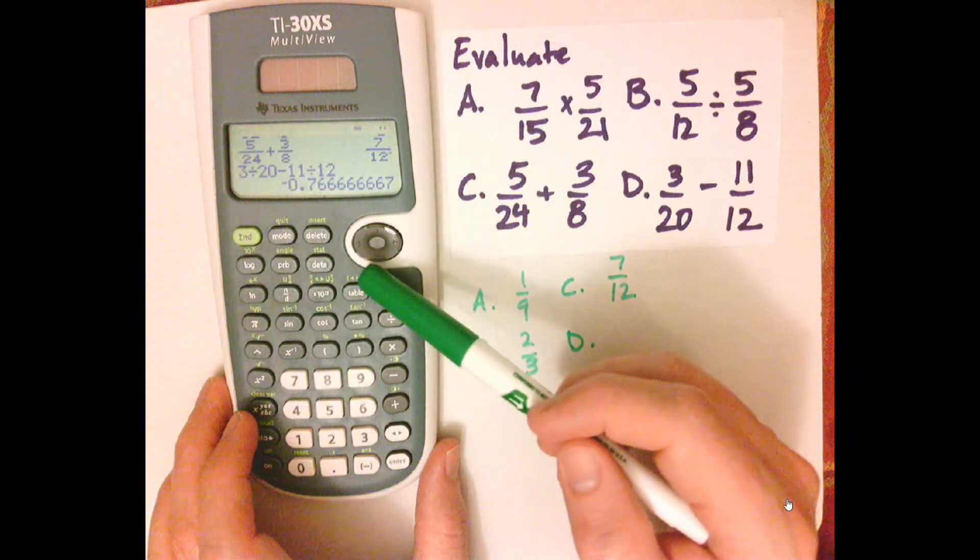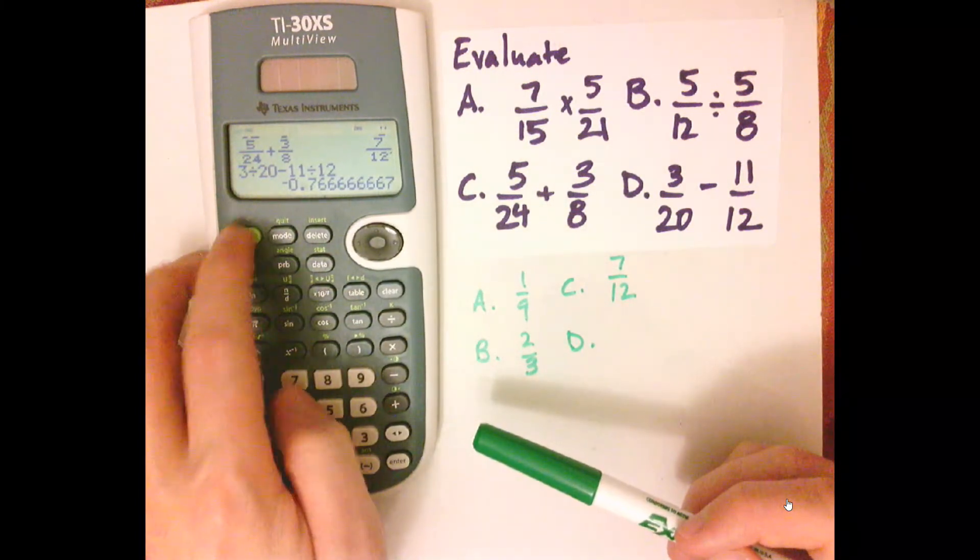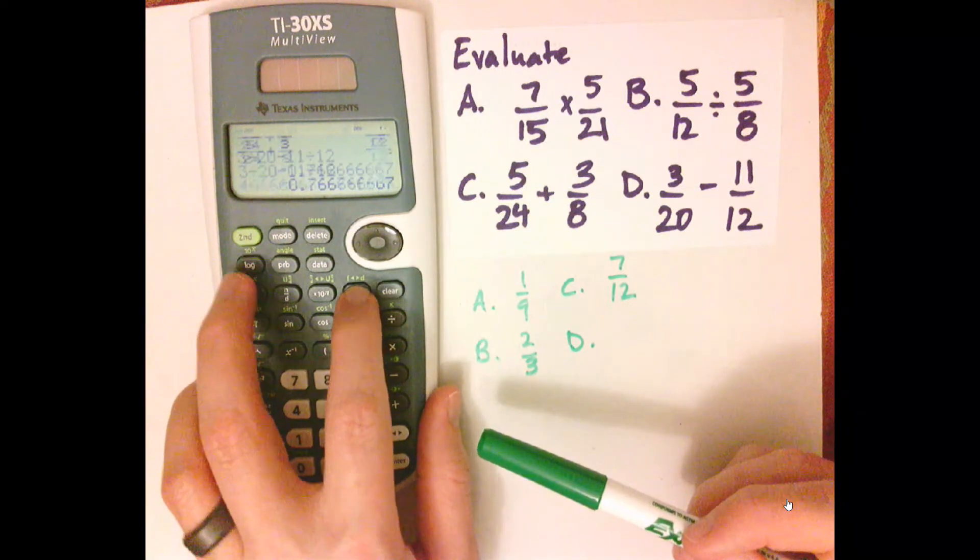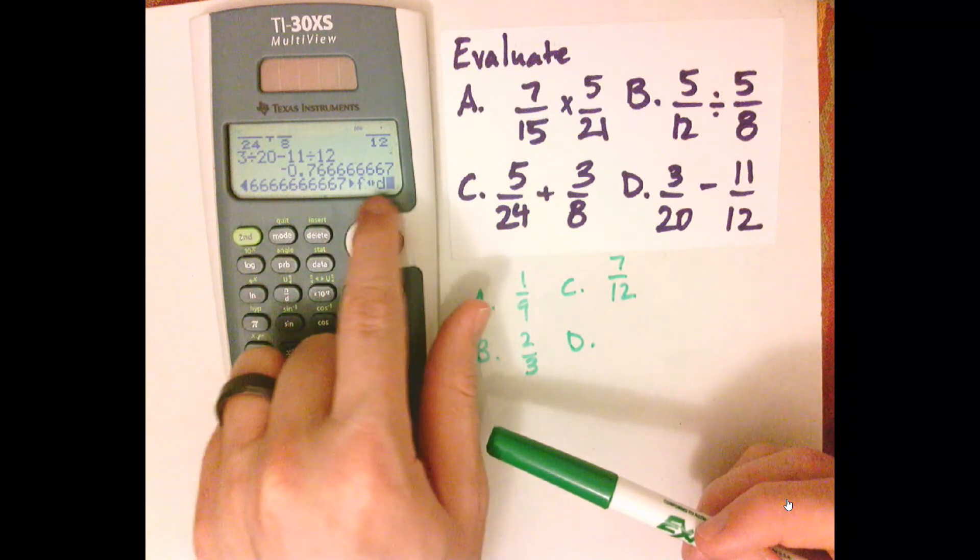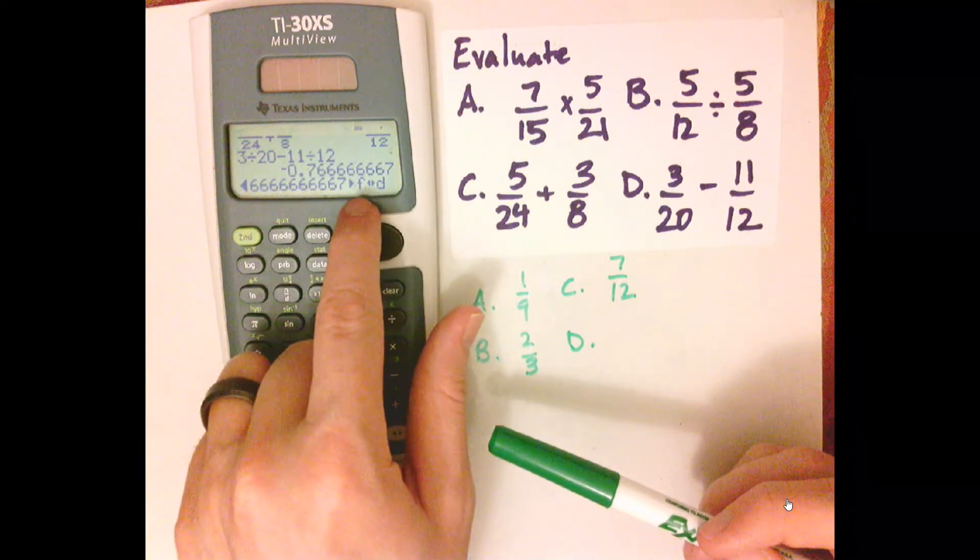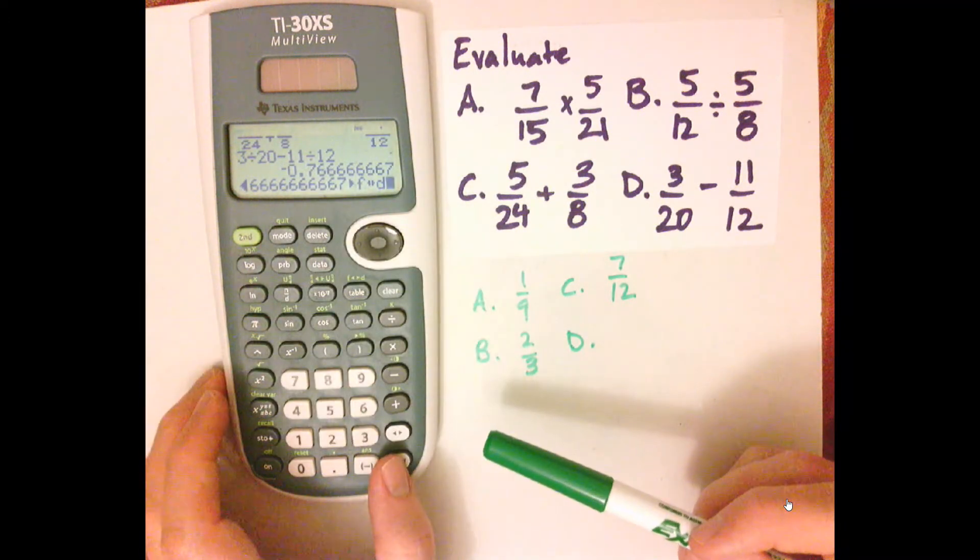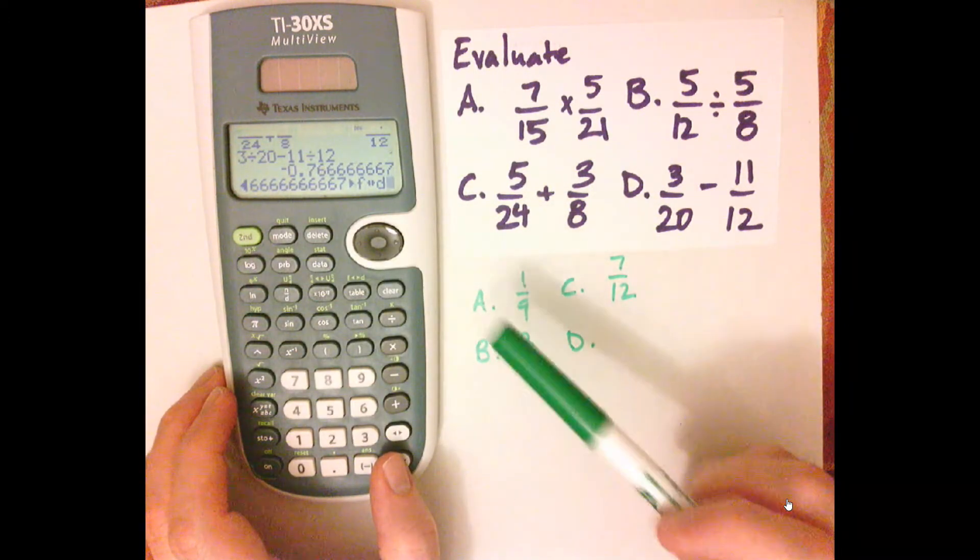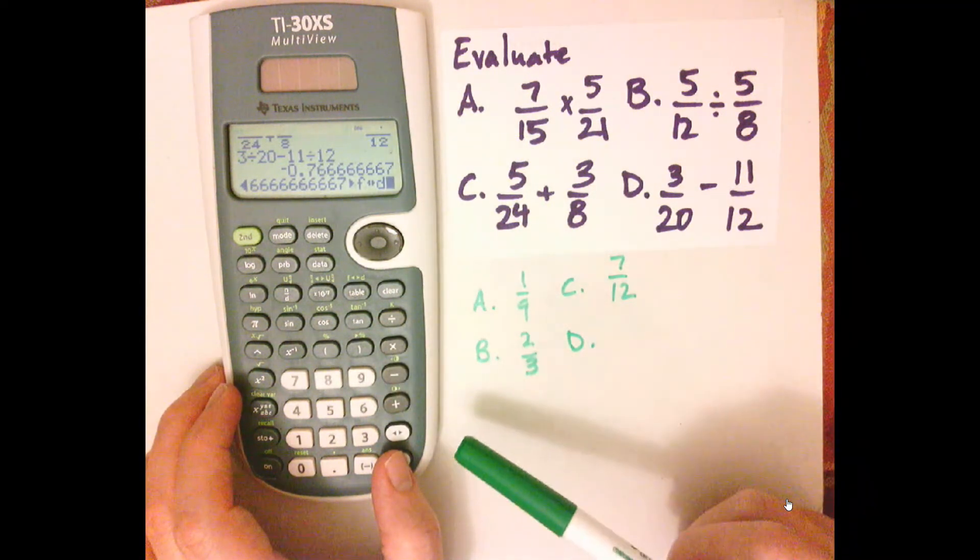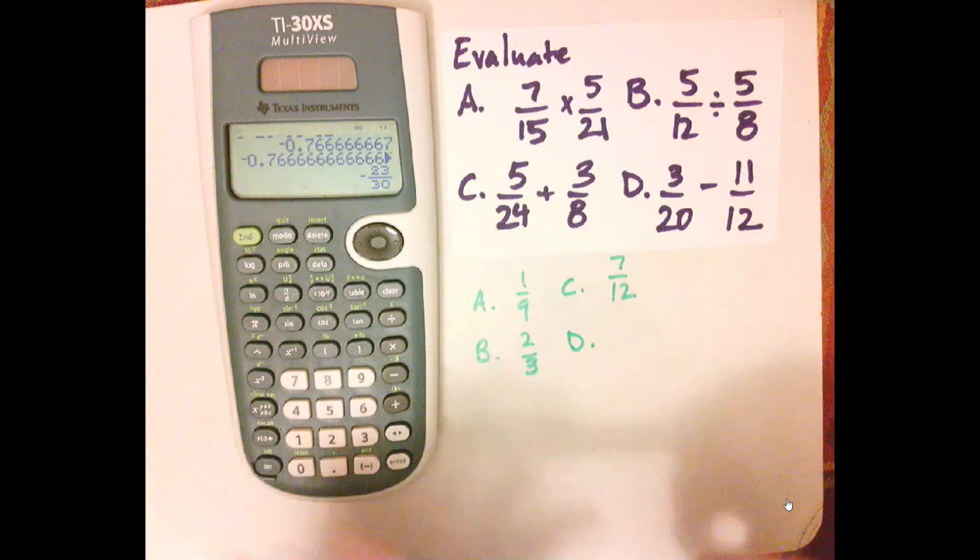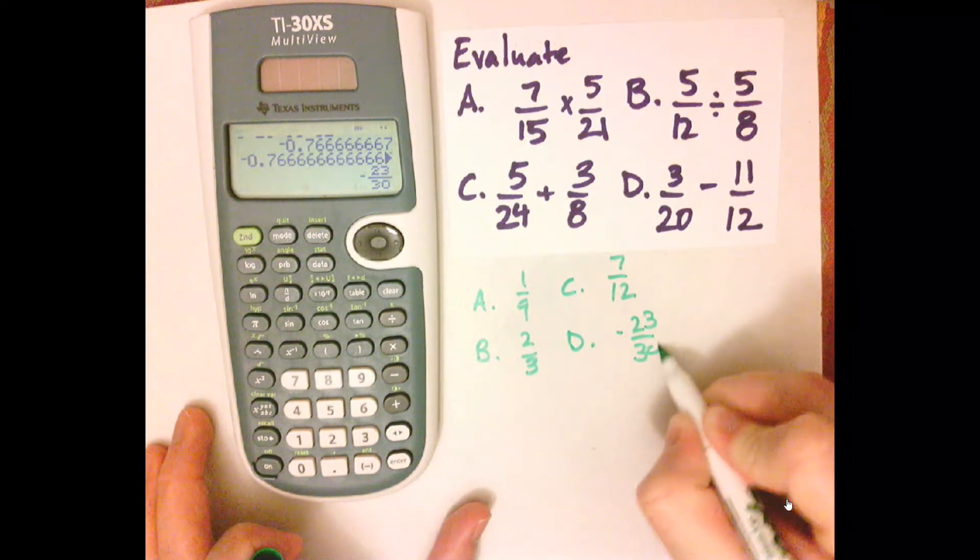Instead of retyping this, I can use the fraction conversion key. So 2nd, and whenever you see arrows, like triangles like this, that means conversion. And F stands for fraction, D stands for decimal, and it switches between them. So if you do a decimal, it converts it to a fraction, fraction converts it to a decimal. There we go. So negative 23 over 30.